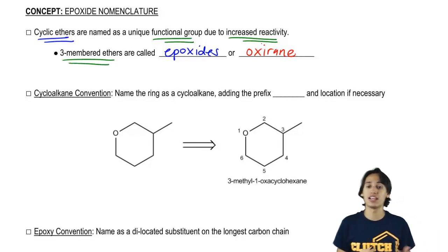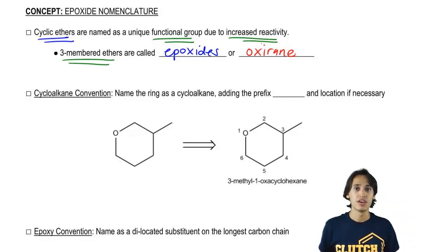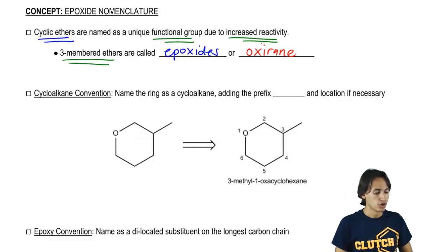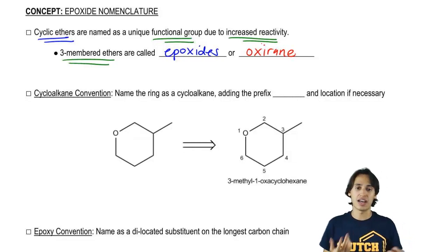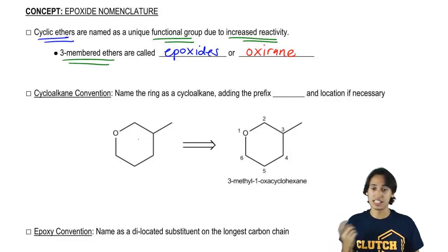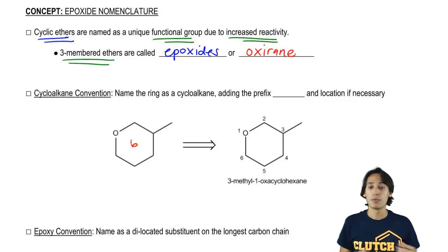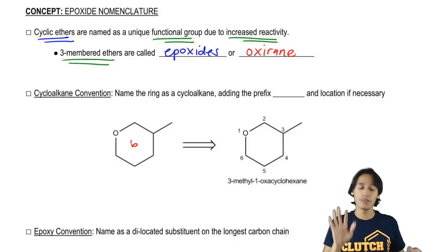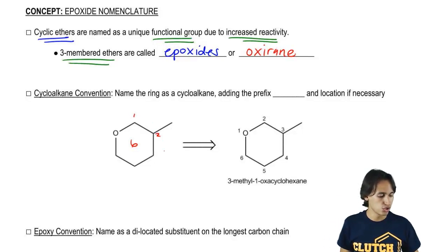Let's start off with what we call the cycloalkane convention. In this type of naming system, what we do is we name the entire ring as if it was an alkane first. So as you can see here, I have a six-membered ring, but how many of those atoms are actually carbons? Only five of them are. I've got one, two, three, four, five.